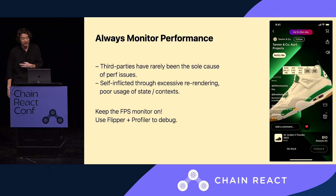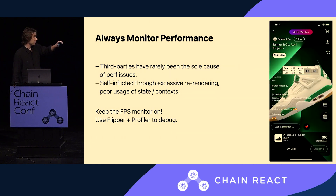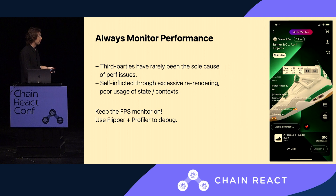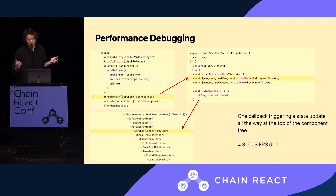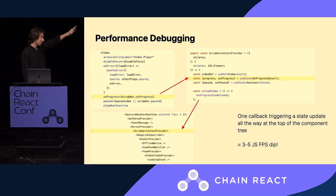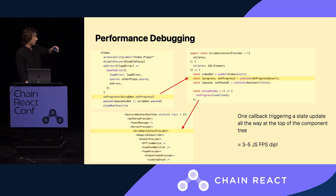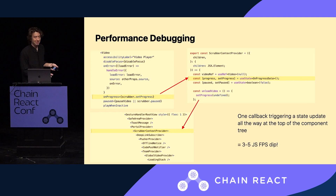Some key takeaways from building this app: you always want to monitor performance — keep your FPS monitor on and you'll find some pretty crazy stuff. In this video example, the app isn't getting used, there's no chat coming in, the only thing happening is the video in the background, and it's dipping between 58 and 55 FPS for seemingly no reason. With Flipper, we recorded the rerenders and found exactly which part of the tree was causing the issue. It turned out we had a context provider with a state variable listening to whenever the video got updated, causing a three to five JS FPS dip. It was a feature built months ago that nobody paid attention to. As soon as we removed that state variable, we went directly back up to 60 FPS.